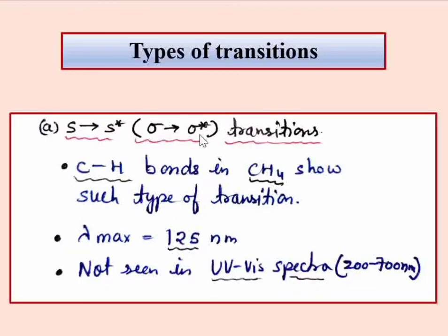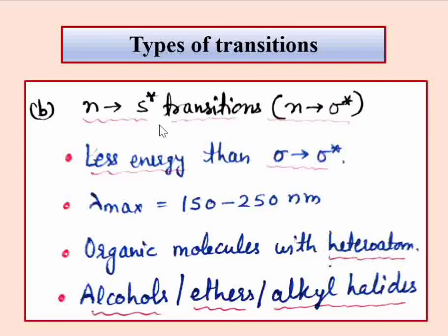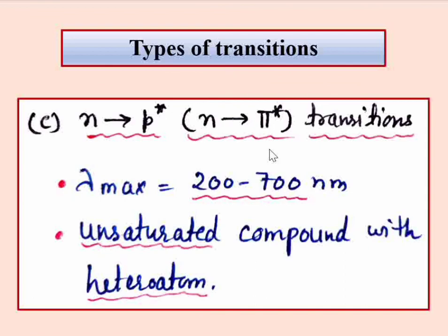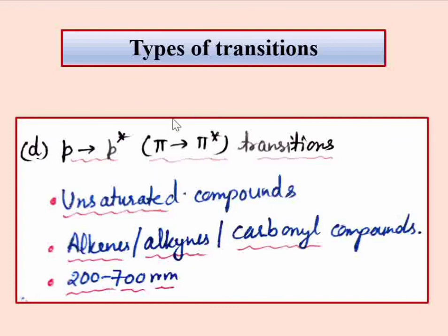To summarize: transitions involving S, P, and N electrons have four types — sigma to sigma star, n to sigma star (heteroatom with sigma bond), n to pi star (heteroatom with pi bond), and pi to pi star (double or triple bonded unsaturated systems with pi bonds). These are the transitions seen in organic molecules.